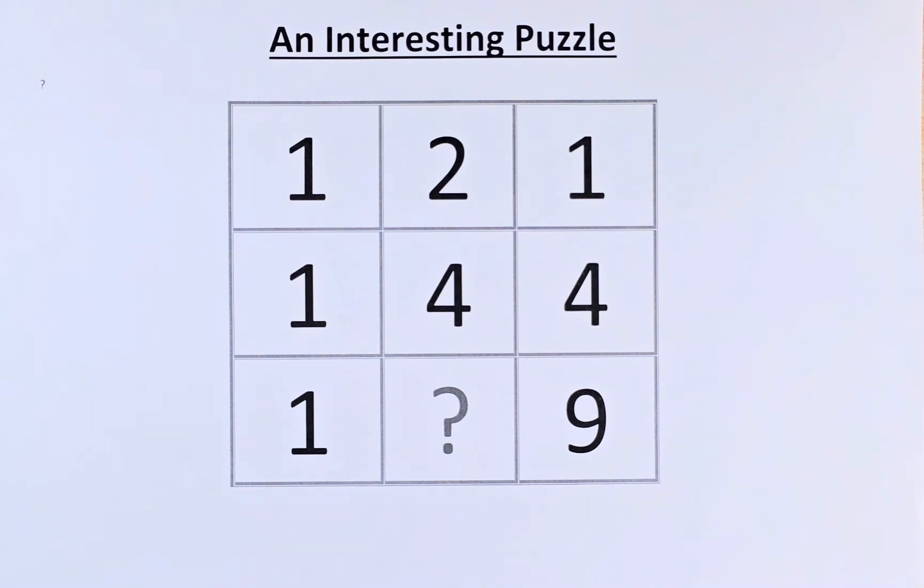Welcome back to this simple but interesting puzzle. The numbers are, on the first row, we have 1, 2, and 1. In the second row, we have 1, 4, and 4. And in the final row, we have 1, a question mark, and a 9.